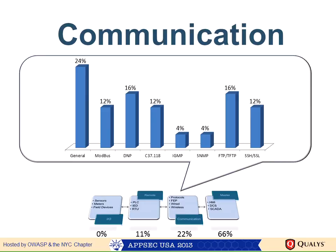Moving to communication component vulnerabilities, in the last year about 24% were in miscellaneous components, 12% in Modbus protocol implementation, 16% in DNP3, 12% in C37.118, 4% IGMP, 4% SNMP, 16% in FTP, and 12% in SSH/SSL. This chart mixes normal IT protocols like SSH, FTP, Telnet, and IGMP with SCADA-specific protocols like Modbus and DNP3.